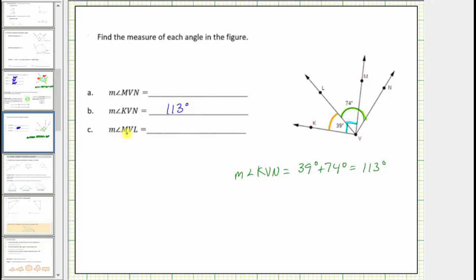Next, let's find the measure of angle MVL. If we focus on the right angle KVM, notice how this tells us that angle MVL and angle LVK are complementary, which means the sum of the measures of those angles must equal 90 degrees. Therefore, the measure of angle MVL must equal 90 degrees minus 39 degrees, which equals 51 degrees.